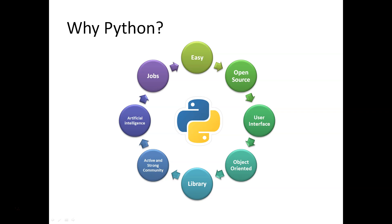Now let's answer the question: why Python? First of all, Python is easier to learn compared to other programming languages. Python is an open source language, so it's always open for improvement. We can design user interfaces with Python. Python is also suitable for object-oriented programming and has a wide range of libraries, which provide a great infrastructure for various purposes. Python has an active and keen community, which makes it easier to access information. Because of all these factors, Python provides great means for learning and applying artificial intelligence, and knowing Python creates great job prospects.